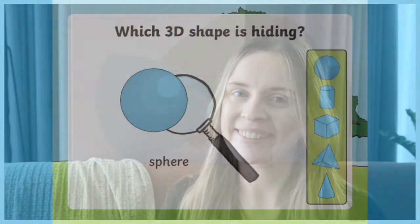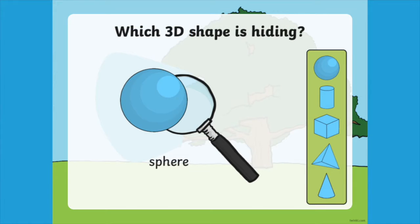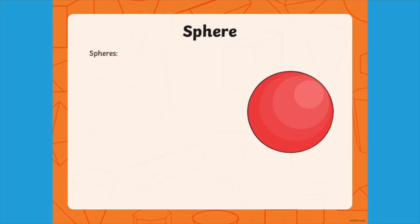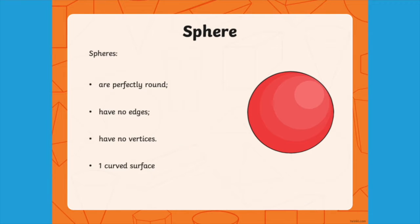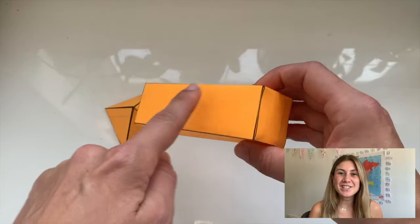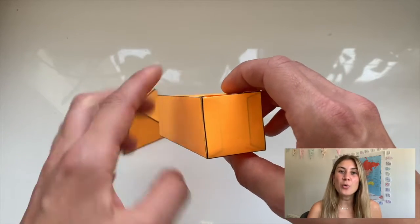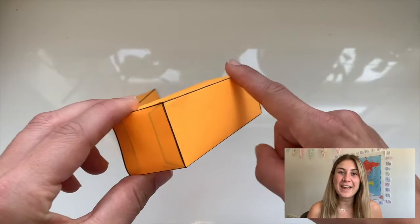In the first lesson, Georgina teaches children how to identify 3D shapes and their properties. The 3D shape that's hiding is a sphere, and a sphere is perfectly round. Children will also discuss vertices, edges and faces. The edges of a 3D shape are all the sides that go around the face.